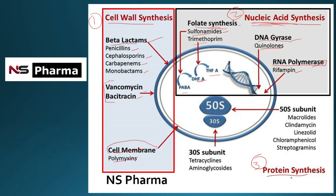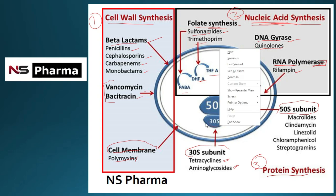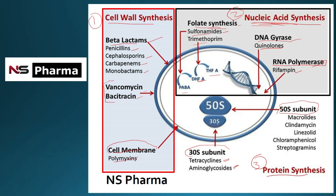Protein synthesis inhibition occurs through the 30S or 50S ribosomal subunit. Through the 30S ribosome, examples include tetracyclines — which was the question — and aminoglycosides. Streptomycin, an aminoglycoside, binds with the 30S ribosome only, and inhibits protein synthesis.